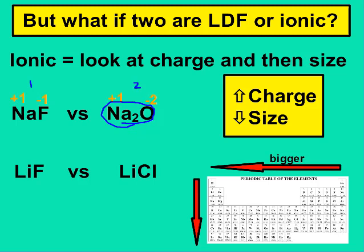For the next two, I have LiF — lithium is plus one, fluoride is negative one, and chloride is negative one. So the charges are the same: one times one is one for both of them. Because the charges are the same, now I'm going to look at size. Atoms get larger as you go left and down on the periodic table. Fluoride is smaller than chloride, therefore LiF must have a stronger attraction than LiCl.